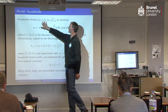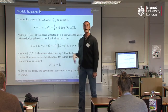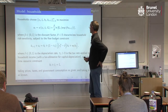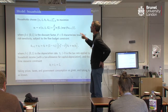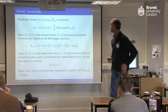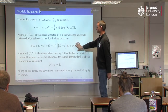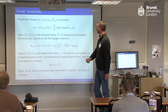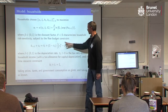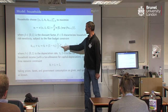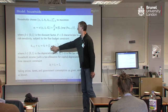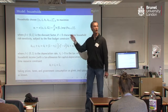The household is going to be choosing this sequence to maximise this lifetime utility function, subject to its flow budget constraint, which is pretty standard. We've just got this tax rate here — so this is their after-tax return, this is their income. There's a deduction on the return the household gets for capital to allow for depreciation. Other than that deduction, their income is taxed. The tax rate is going to be time varying.